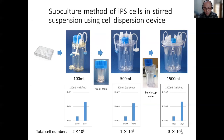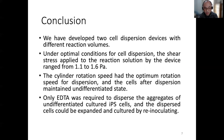For cell dispersion, no enzyme solution was used in any step, and PBS containing only EDTA was used. The obtained cell suspension was not centrifuged, and the dispersed suspension was directly inoculated into the culture medium. In conclusion, this device enables scalable, enzyme-free iPS cell dispersion suitable for large-scale culture.